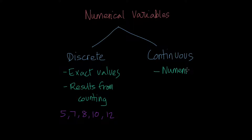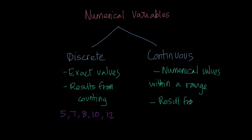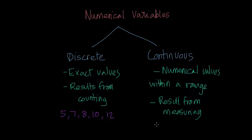The continuous variable, however, consists of numerical values within a certain range, and they result from measuring. This is just a very rough or general idea of how it usually is. For example, the length of lobsters — you get values like 4.9, 5.6, 7.2, 6.7, and so on. This would be a continuous variable.